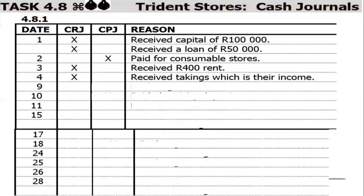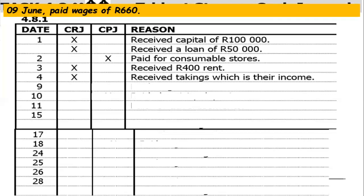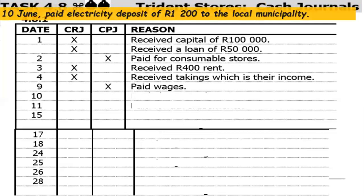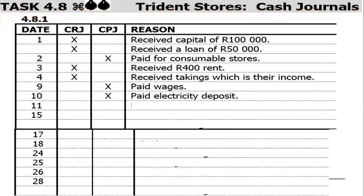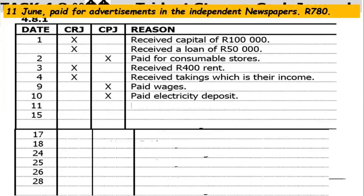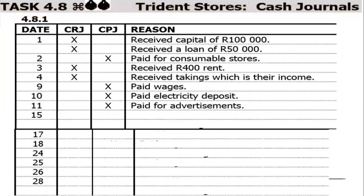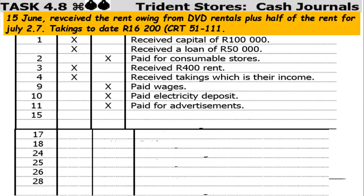On the ninth of June, wages were paid — that's a Cash Payment Journal entry. On the tenth of June, they paid an electricity deposit of 1,200 rands to the local municipality — another payment, so CPJ. On the eleventh of June, they paid for advertisements in the Independent Newspaper amounting to 780 rands — again a Cash Payment Journal entry.